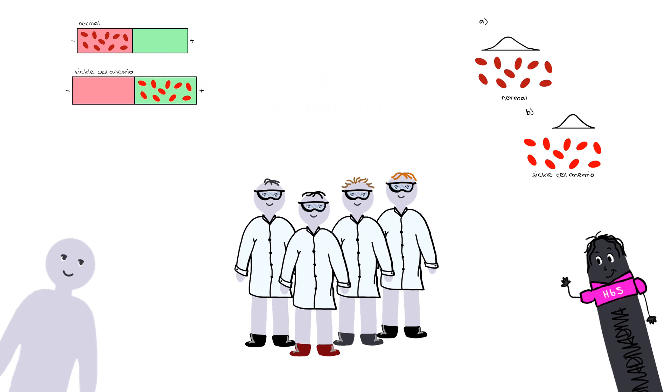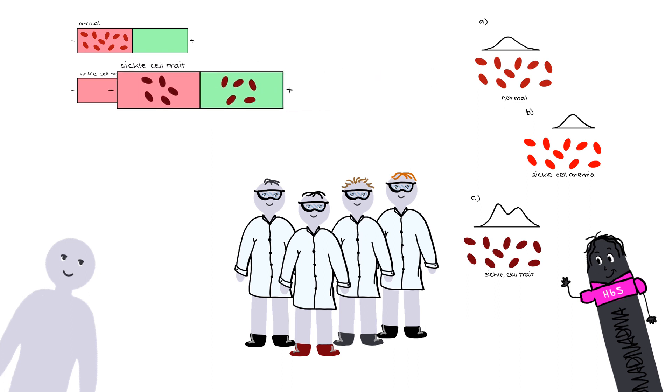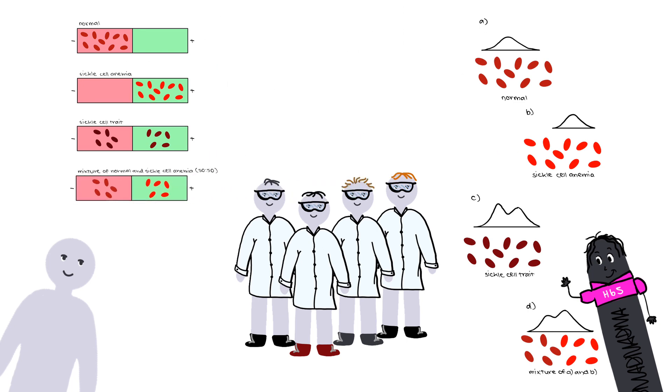When they tested the hemoglobin from cells with the sickle cell trait, around half the hemoglobin moved as negative charges and the rest as positive charges. This was similar to the results observed in a 50-50 mixture of normal hemoglobin and hemoglobin from people with sickle cell anemia.